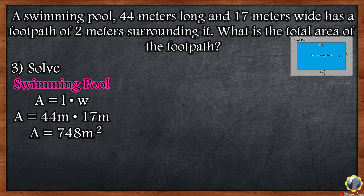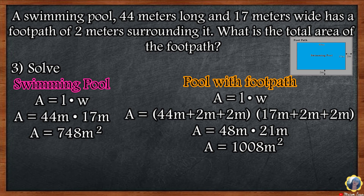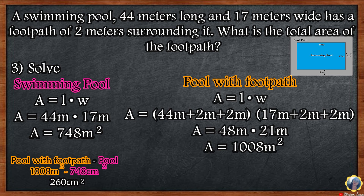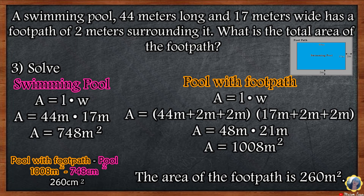Step 1: Find the area of the swimming pool. The length is 44 meters and the width is 17 meters. 44 meters times 17 meters equals 748 square meters. Step 2: Find the area of the swimming pool surrounded by the footpath. 44 plus 2 plus 2 meters times 17 plus 2 plus 2 meters — that is 48 meters times 21 meters — equals 1,008 square meters. Step 3: To find the area of the footpath, subtract the area of the swimming pool from the total area. 1,008 square meters minus 748 square meters equals 260 square meters. The area of the footpath is 260 square meters.